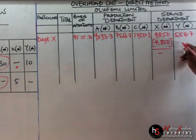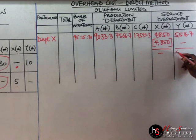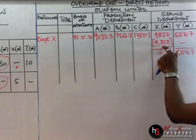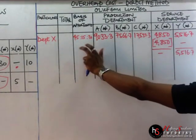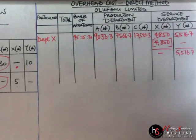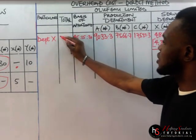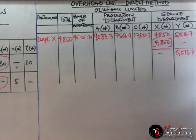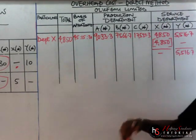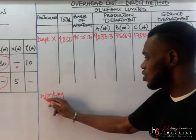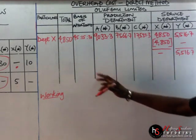This particular value, we have a dash, then we bring it down — we have 5,516.7. Coming to this total, this value we have here is what we are going to distribute to production departments A, B, and C. This one we're going to have as our total: 4,850. So let's show our workings now for the distribution.